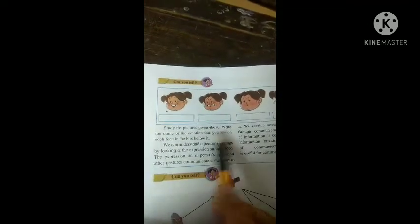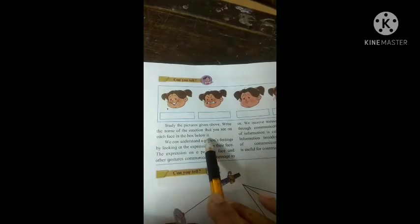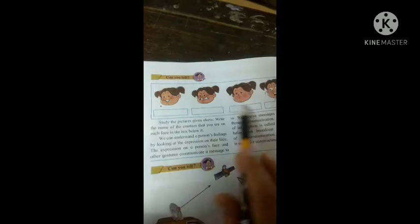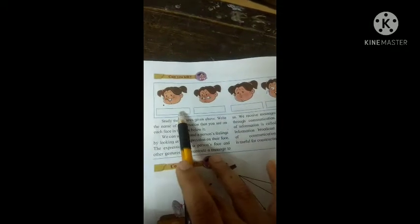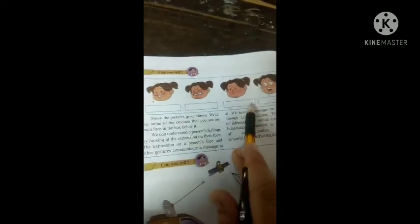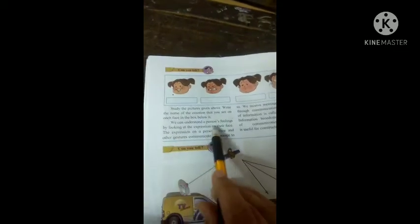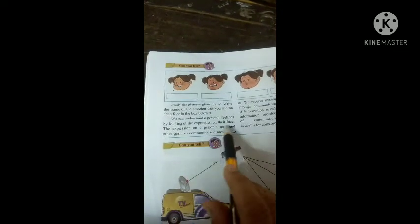Study the pictures given above. Write the names of the emotion that you see on each face in the box below it. You can understand a person's feelings by looking at the expression on their face.